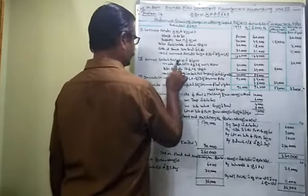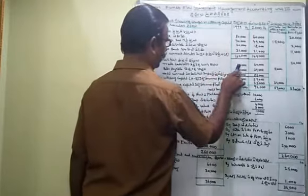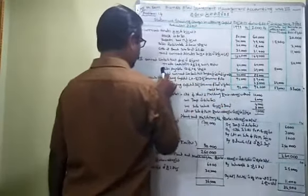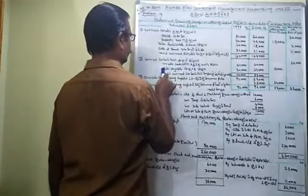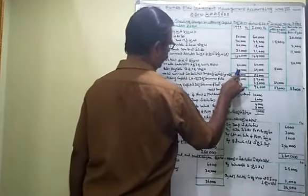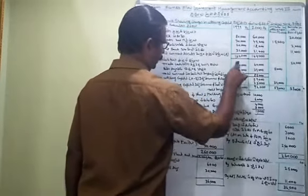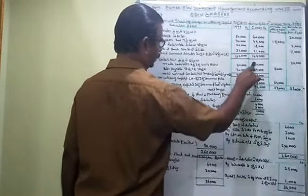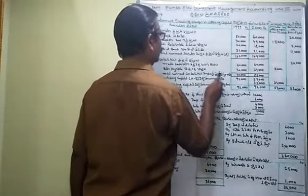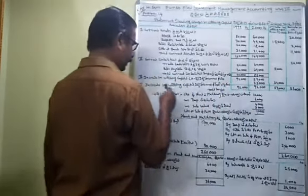Roman numeral II: current liabilities. The trade creditors are 40,000 and 60,000 — a difference of 20,000. Bills payable is 30,000 and 20,000, giving 50,000 and 70,000. Total current liabilities is 70,000 and 85,000.